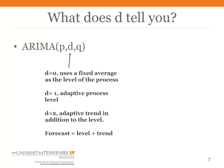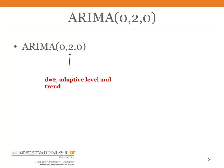If we're forecasting more than one period into the future, we multiply the trend times the number of periods we're forecasting. For example, if the trend value is five, that says we expect the time series to increase by about five each period. For the ARIMA 020 model, the two tells us we have an adaptive level and an adaptive trend, and the forecast is the level plus the trend.